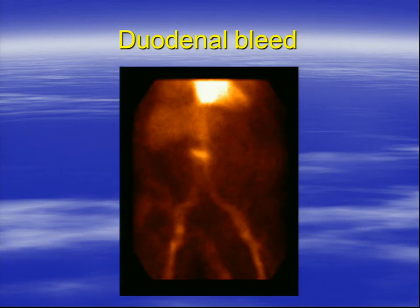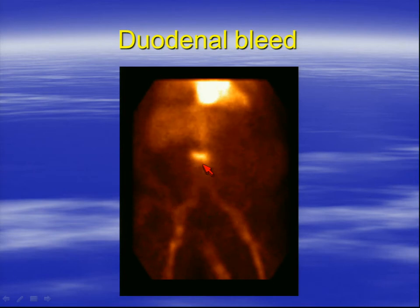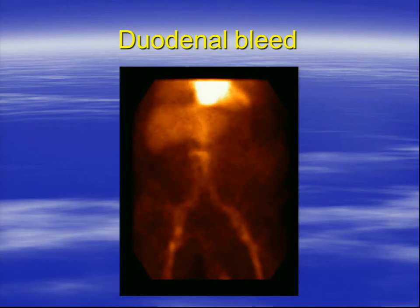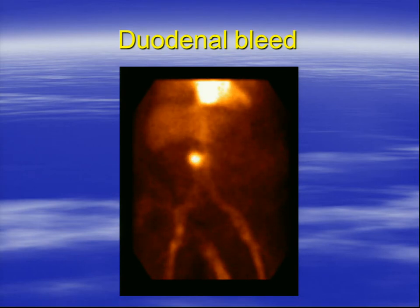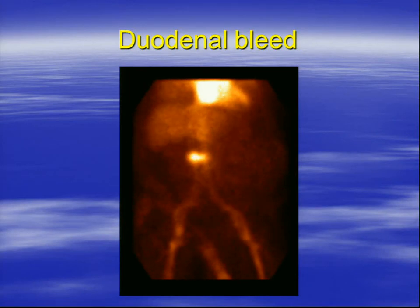Here's another example. Notice it's coming from the upper abdomen — this is coming from the duodenum, the first part of the small intestine. That's an entirely different situation from the first case. Here it would be a different vessel they'd go after. If the bleeding was really bad and the surgeon had to operate, this also tells the surgeon where to go. Without a study like this, they're going in blindly, having to open up the belly and figure out where the problem is. This gives very specific localization of where the bleeding is occurring.